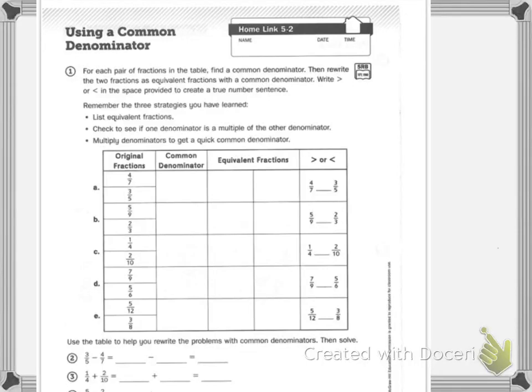Today we practice using a common denominator. The directions say for each pair of fractions in the table, find a common denominator. Remember, that is listing the multiples and you want to find the smallest one.